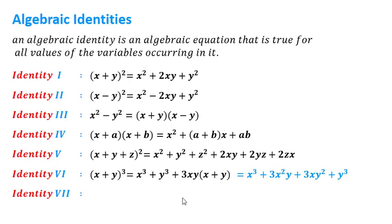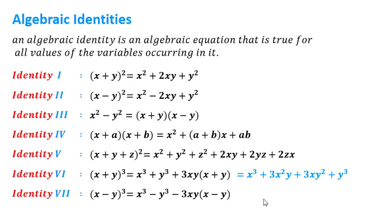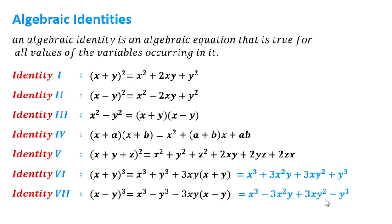The seventh identity is (x − y)³ = x³ − y³ − 3xy(x − y). Wherever there is an odd power of y, we take a negative sign. Opening the bracket gives x³ − 3x²y + 3xy² − y³. In this expression, wherever the power of y is odd, a negative sign is used.